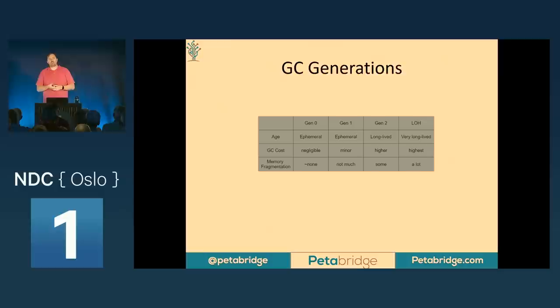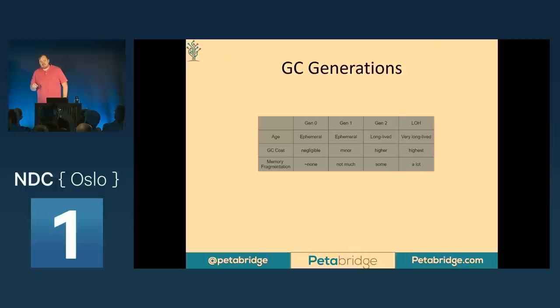Another Gen Two example: if you have objects that are extremely long-lived — in the Akka.NET actor space, if you have an actor running in the background for months or days at a time, that actor and all of its state will all be in the Gen Two garbage collection category. Then finally we have our fourth generation, which is a special case: the Large Object Heap.